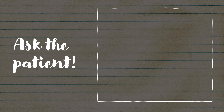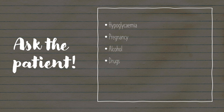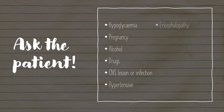Once the patient has recovered, it's worth having a chat to work out whether they know what's caused this series of seizures. They may have been hypoglycemic, pregnant, it could be due to the effects of alcohol or drugs, they may have a CNS lesion or infection, they might have known high blood pressure, have a brain disease like encephalopathy, or may have forgotten to take their anticonvulsants if they have known epilepsy.